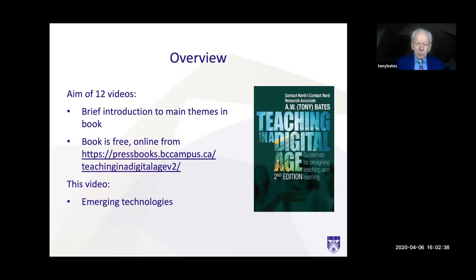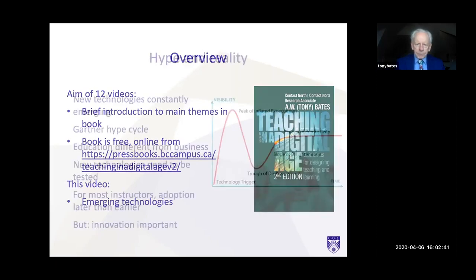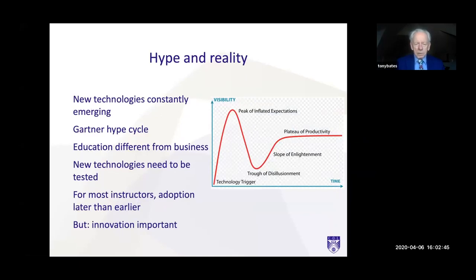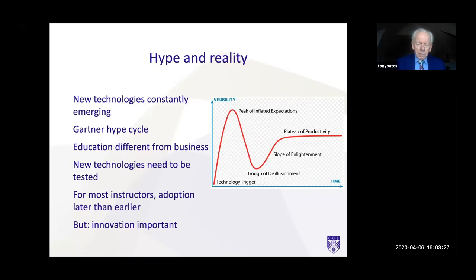This particular video, the last one, is on emerging technologies. There's a lot of hype around new technologies all the time and there's a big difference between the hype and the reality, but new technologies are constantly emerging. This is the Gartner hype cycle, which I find very useful because many new technologies and their application in education fit this pattern. There's an initial peak of inflated expectations, then a trough of disillusionment when people start finding out the limitations, then people begin to learn what the unique affordance of the technology is in their particular context, and then it reaches a plateau of productivity.